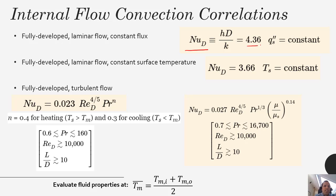When you have fully developed laminar flow with a constant surface temperature, your Nusselt number is also a constant, and that is 3.66. When you have fully developed turbulent flow, your Nusselt number is a function of Reynolds number and Prandtl number, just like you saw in many of the relationships on external convection.